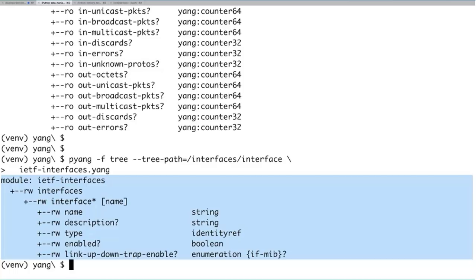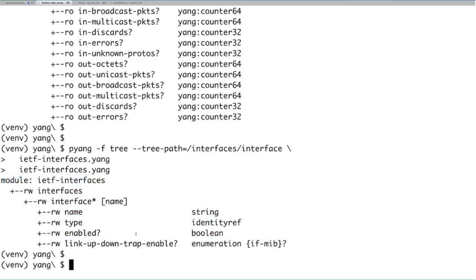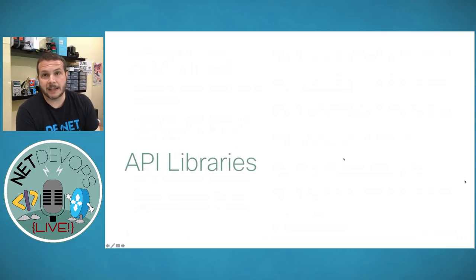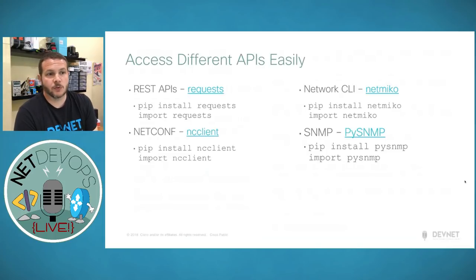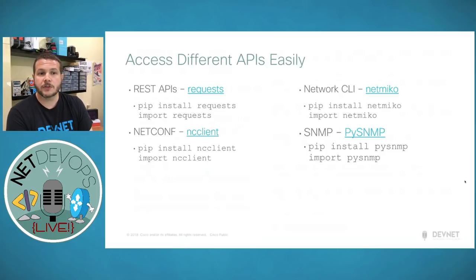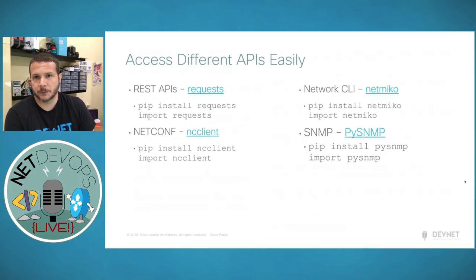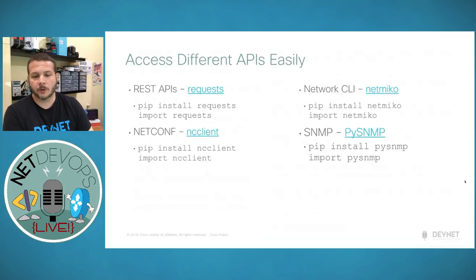That covers our Yang examples. Let's continue into our next section: API libraries. There are lots of different APIs we might work with as network engineers — REST APIs including RESTConf and native REST APIs, NetConf, and of course CLI and SNMP interfaces. Python has libraries for all of these. I encourage every network engineer to try to move to REST or NetConf whenever possible, but we still have plenty of infrastructure that doesn't support them yet, so being comfortable with all these protocols will be important.